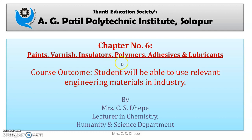In the previous video we covered polymer classification - three types of polymer classification: on the basis of monomer, on the basis of structure, and on the basis of thermal behavior. In this video we are going to cover polymerization and types of polymerization, and a few examples of polymers.